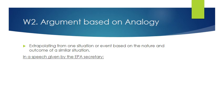The next kind of warrant — W2 — is the argument based on analogy. This is where you're extrapolating from one situation or event based on the nature and outcome of a similar situation or event. The links are generally case-based or precedent-based. In legal reasoning, for example, they'll say: in a previous case the courts ruled this way, and our case is a lot like that previous case, so you should rule the same way.